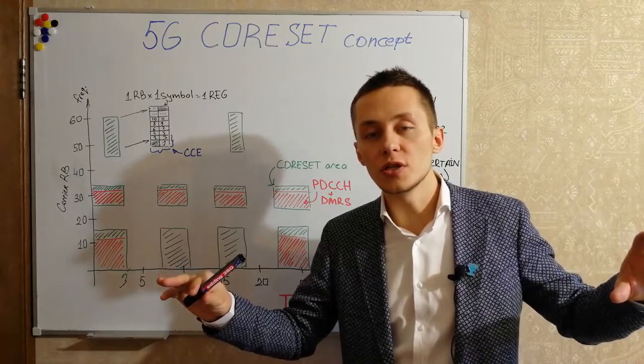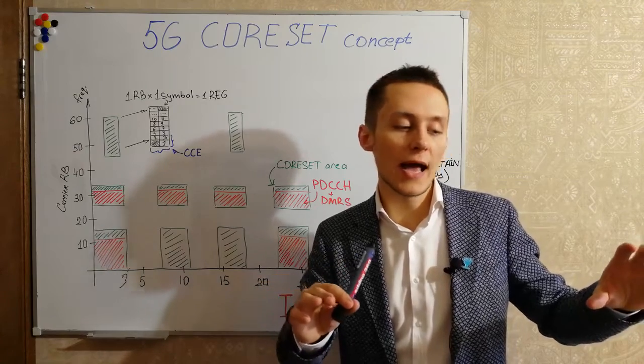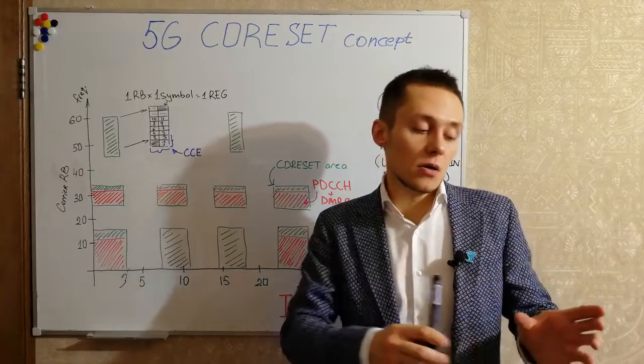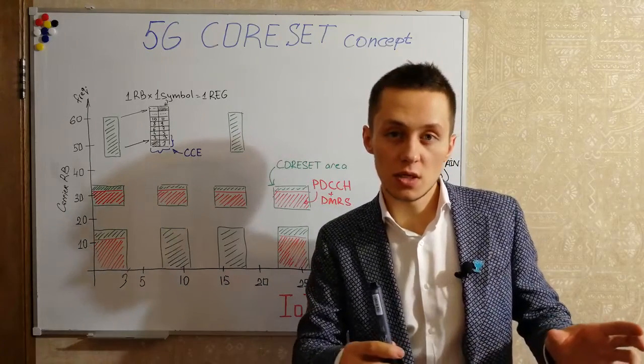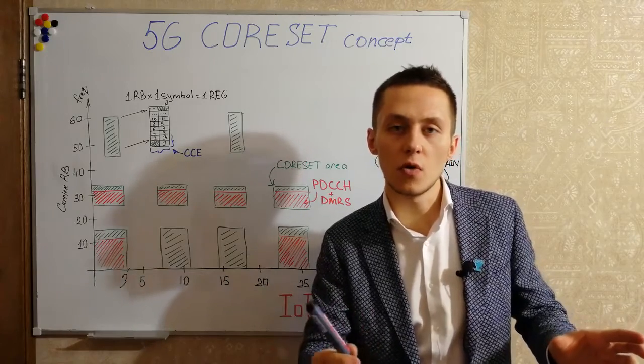PDCCH in LTE may have different resources, different symbols in time domain: 1, 2, 3 or sometimes even 4.